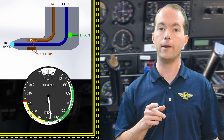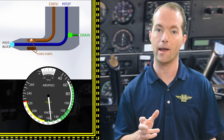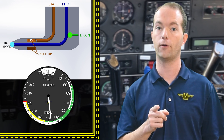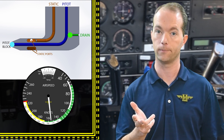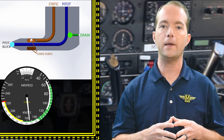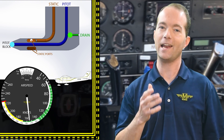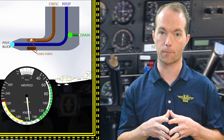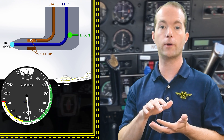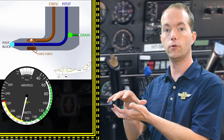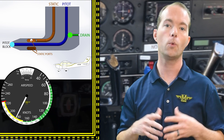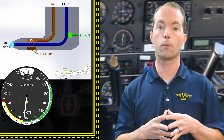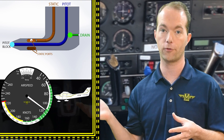If your pitot tube and drain hole both got blocked at the same time, air gets trapped and the airspeed indicator will freeze where it is — airspeed changes won't be shown. With a blocked pitot tube and drain hole, the ASI will act kind of like a vertical speed indicator: since the ASI depends on a difference between ram and static pressures, an increase in altitude will cause the diaphragm to expand and show an increase in airspeed, which of course should not happen when you're climbing. The reverse is also true during a descent.